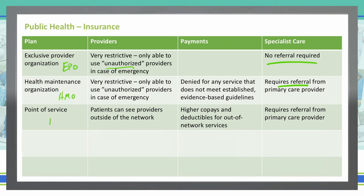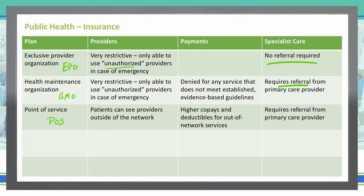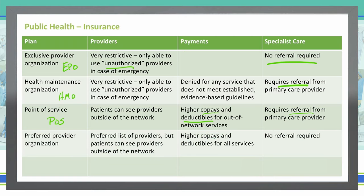The next one is Point of Service, also abbreviated POS. Patients can see providers outside of the network here, making these good cost-saving plans for some people. They do have higher co-pays and deductibles for out-of-network services, but that does allow patients to see out-of-network providers. For example, if your specialty provider is out-of-network, you could go with a POS plan and still see that preferred specialist, though with higher co-pays and deductibles. Similar to HMO, it does require a referral from your primary care provider to see a specialist.